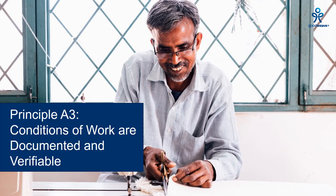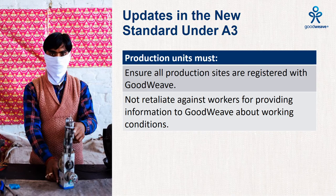The intention of Principle A3 is to ensure that conditions of work are documented and verifiable, and this principle has not really changed in the new standard. Producers must administer business practices that are transparent and adhere to all relevant local and national laws at all levels of the supply chain. All production sites must be registered, including home-based work sites, and access must be provided for unannounced inspections. The only change under A3 is a requirement prohibiting employers from retaliating against workers for providing information to GoodWeave about working conditions — for example, a worker cannot be laid off for speaking with GoodWeave during or after an audit.